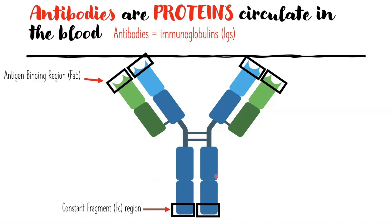The tail region is called the constant fragment, or FC region, where the immune cell receptor binds to. The structure of the tail determines the antibody class, which also determines which immune cell will bind to it and how it will function.